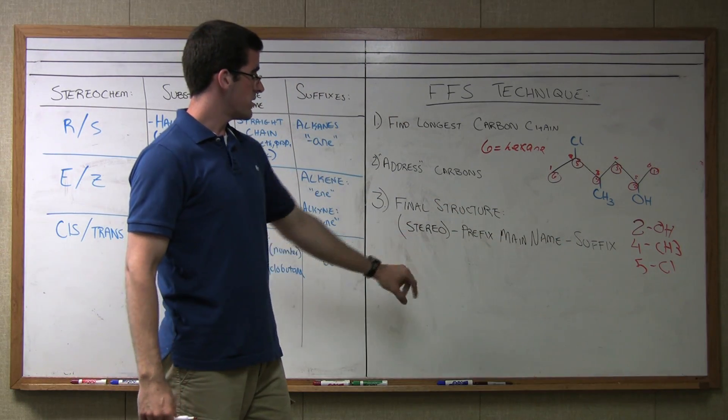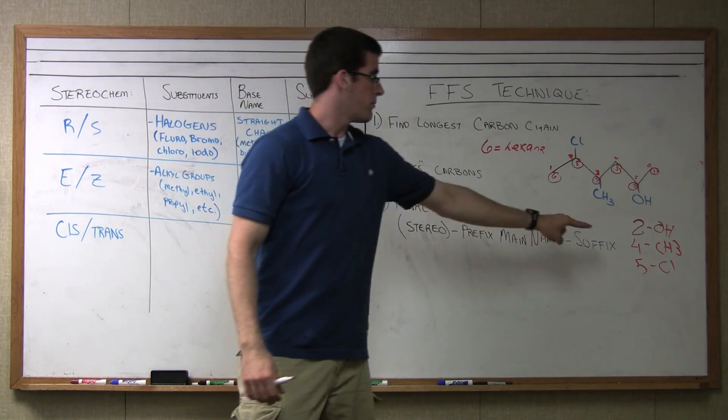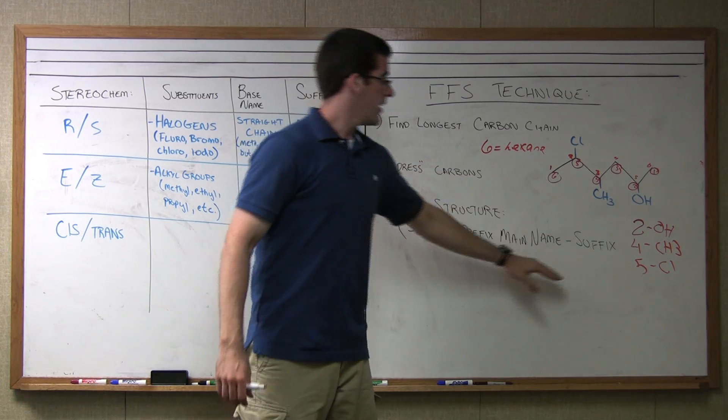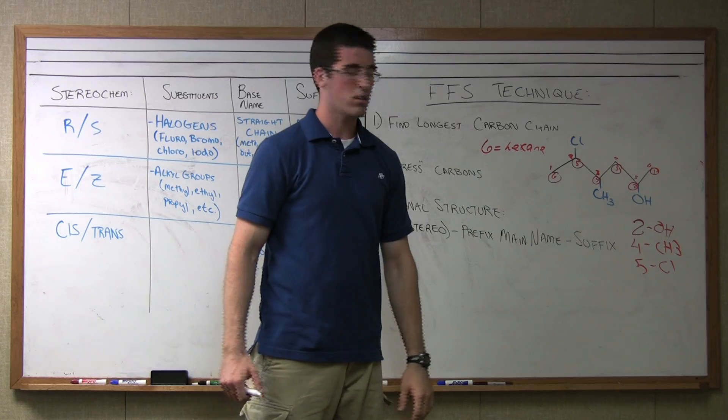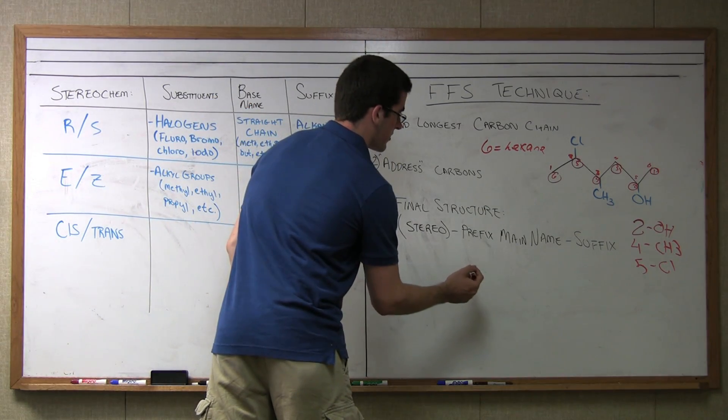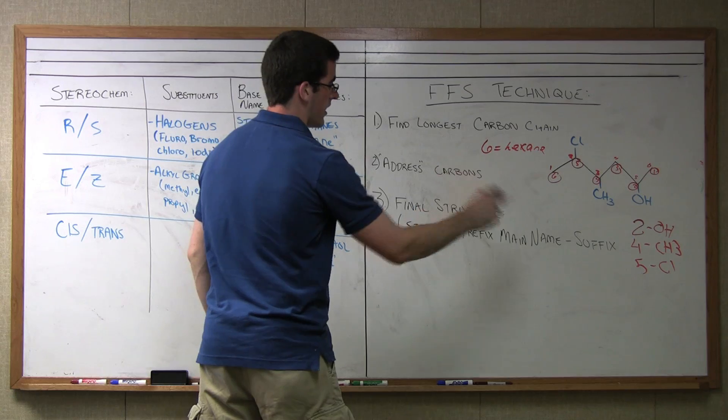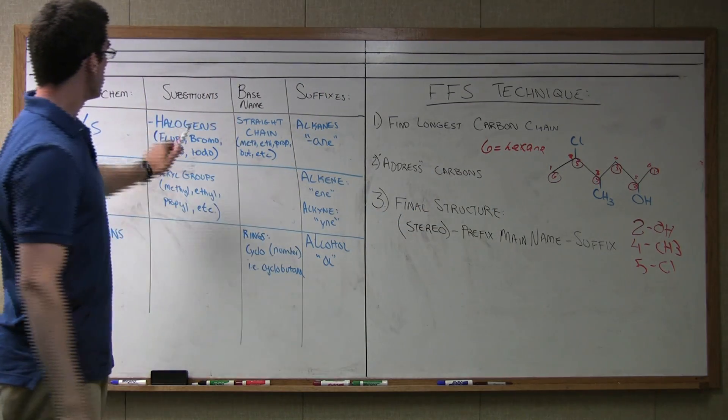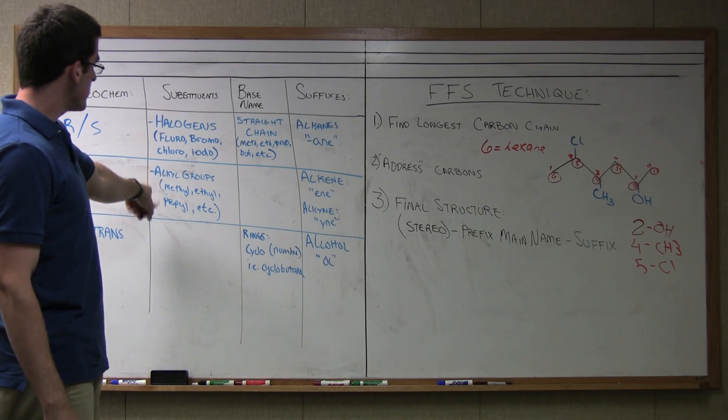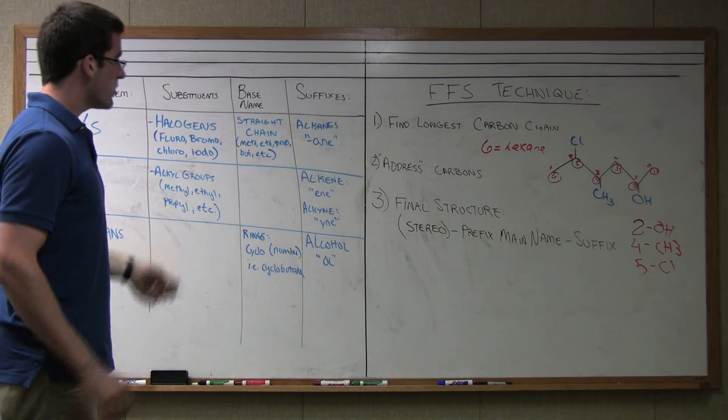We have two substituents that become prefixes: the methyl and the chlorine. Then we have our main name, which we established as hexane, and our suffix, which is altered by having the alcohol. The first thing we're going to do is layer our prefixes. According to the rules, halogens become things like fluoro, bromo, chloro, and alkyl groups become things like methyl, ethyl, and propyl.